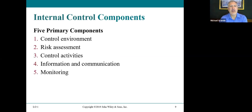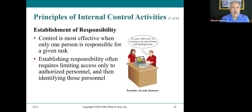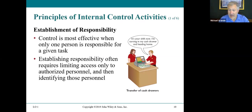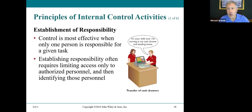There are five primary components of internal control: a control environment, risk assessment, control activities, information and communication, and monitoring. Regarding the establishment of responsibility — control is most effective when only one person is responsible for a given task. This way we know who's responsible for that activity. If there's a problem or an error, we know who to go to.